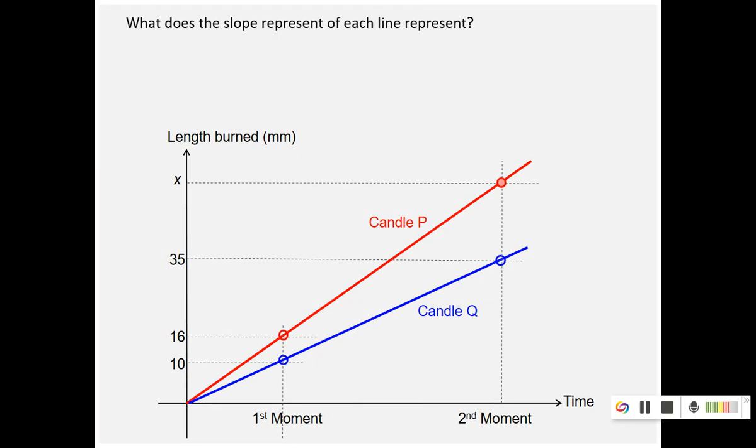So one way is to first look at what does the slope of each line mean? Like for example, the slope of candle Q, what does that mean? You can see that the slope for candle P is steeper. Now, but however, the burning rate, both of them represent burning rate. The slope represents burning rate. But can you tell what is the burning rate?